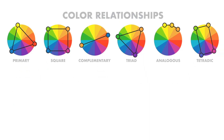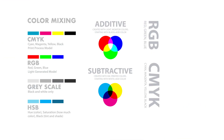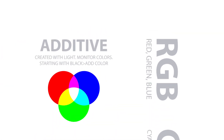Let's talk about RGB and CMYK color modes. RGB stands for red, green, and blue — it's an additive color mixing model used mainly in screens to create colors. Mixing all three colors generates white. You'll always use RGB mode when designing for screens, such as social media campaigns.